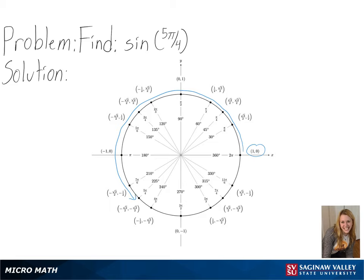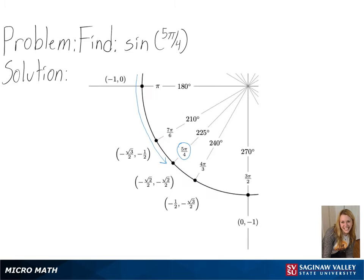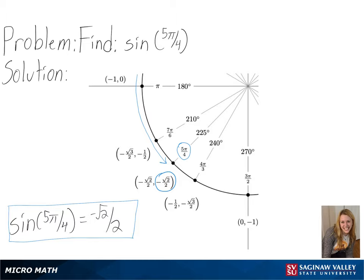Since we are finding the sine value, we will be taking the y-coordinate of our value, which in this case is negative square root of 2 over 2. So for sine of 5 pi over 4, we get negative square root of 2 over 2 as our final answer.